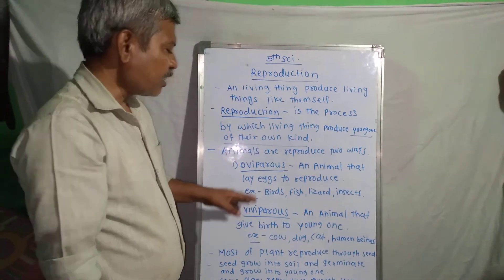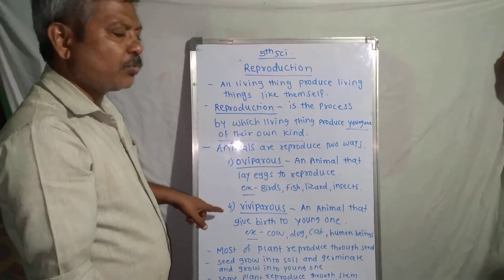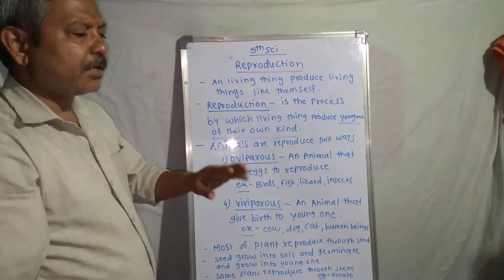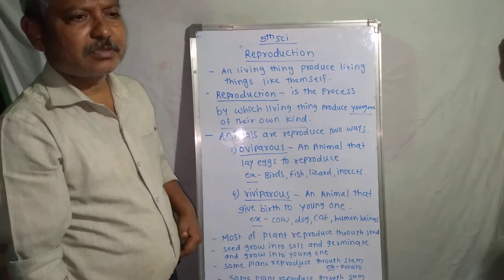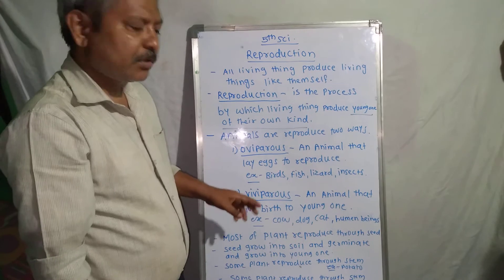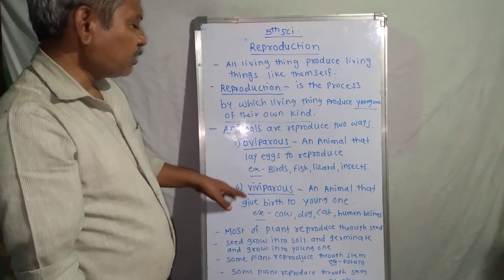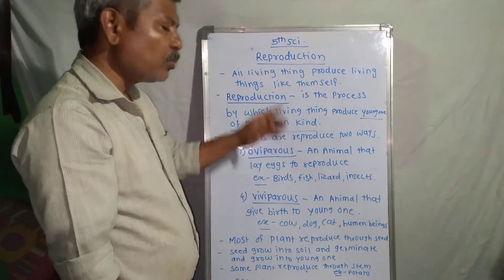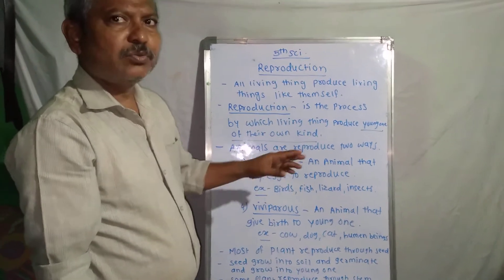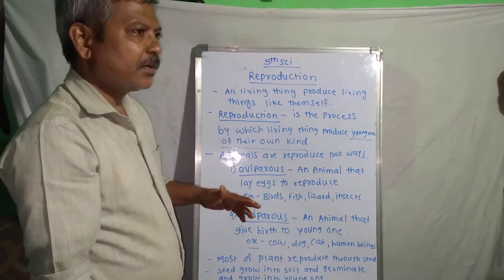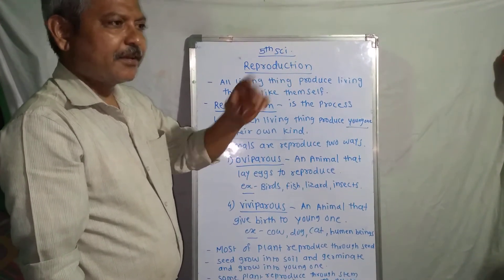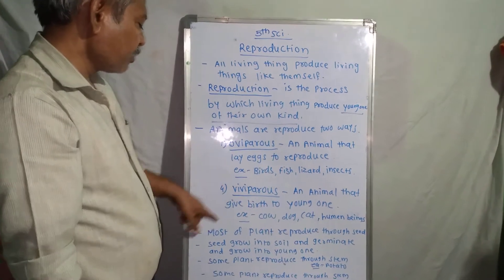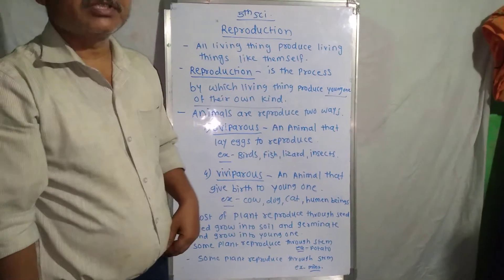They give birth to their young ones. All mammals give birth to their young ones. Bat also gives direct birth to its young ones — bat is the only mammal that flies. So correct your information. Most plants reproduce through seeds.